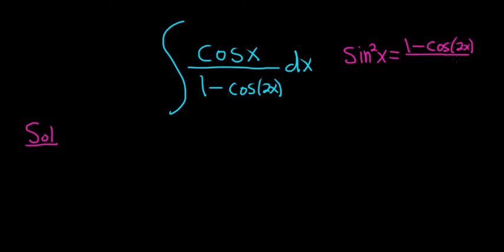I have this one memorized just because I do a lot of integration. This is one of the most useful ones for integrating. And so you see on the bottom here, you have the 1 minus cosine 2x. So what you can do is solve for that by multiplying both sides by 2. So this is 2 sine squared x, and that's equal to 1 minus cosine 2x.